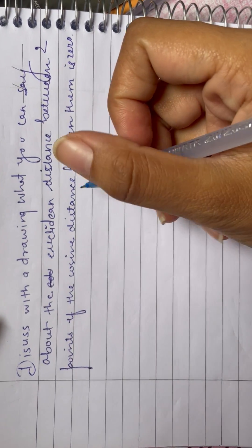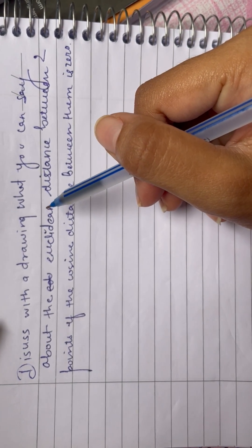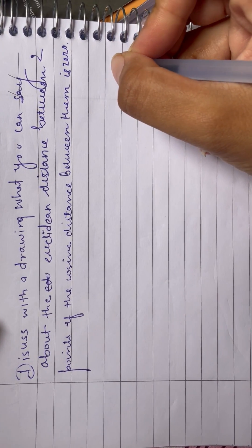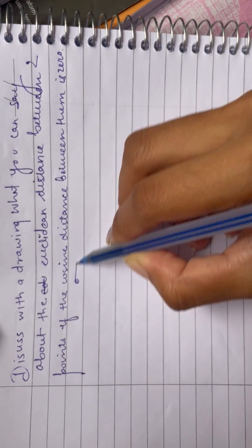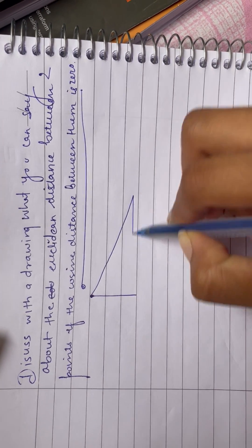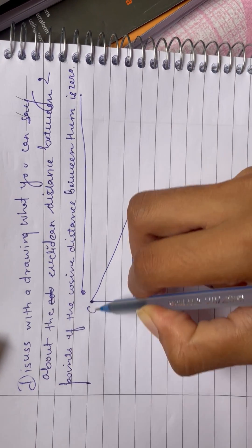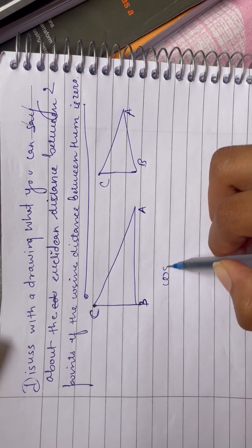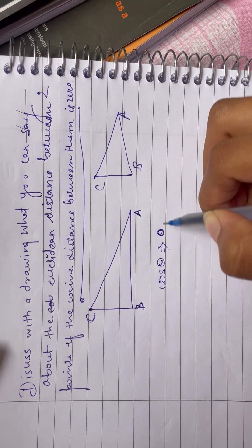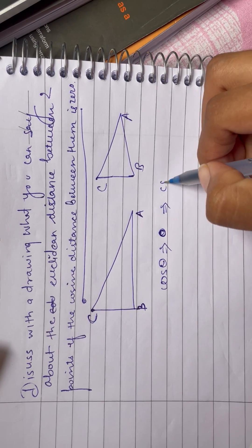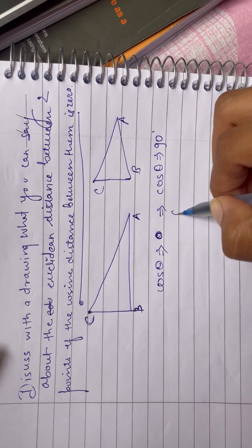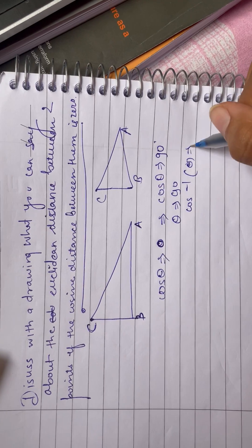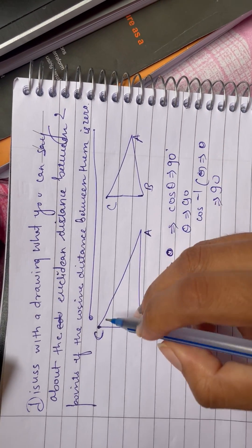Good afternoon. Today I will explain about Euclidean distance between two points when the cosine between them is zero. If cosine between them is zero, let us consider a right triangle and give it points A, B, C. As it is said, cosine theta equals zero only in one condition — when the angle between the two lines is 90 degrees. So theta will be 90 degrees, and cosine inverse of zero equals 90 degrees.